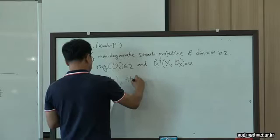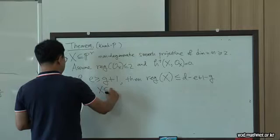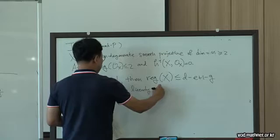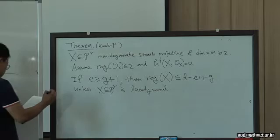If co-dimension is at least 2G+1, then the same statement holds. When X is linearly normal, the regularity is 3, but this number D minus E plus 1 minus G equals 2, so we have to exclude the linearly normal case.